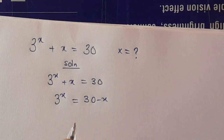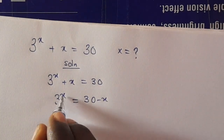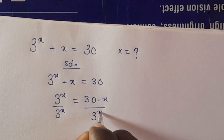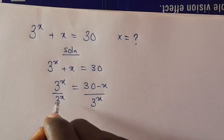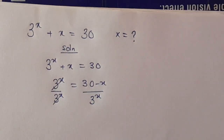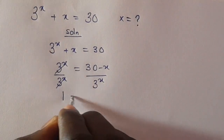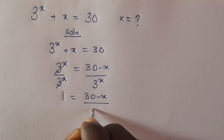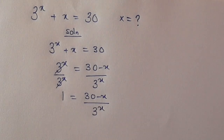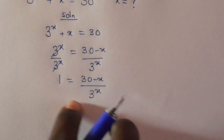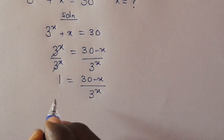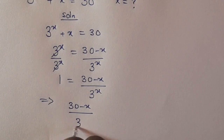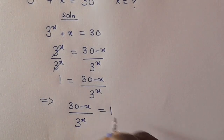The next thing is, let's divide both sides by 3 raised to the power x. This will cancel, then we have 1 equals (30 minus x) divided by 3 raised to the power x. By rearranging this expression, we have (30 minus x) divided by 3 raised to the power x equals 1.